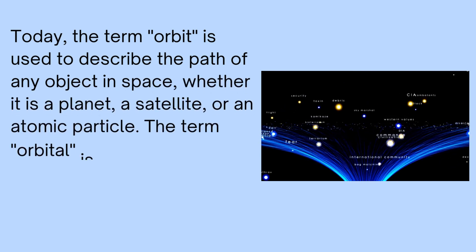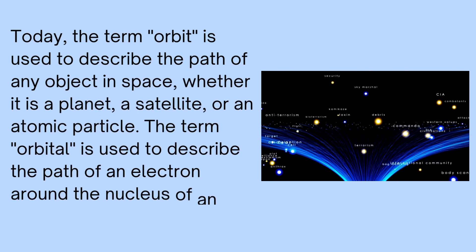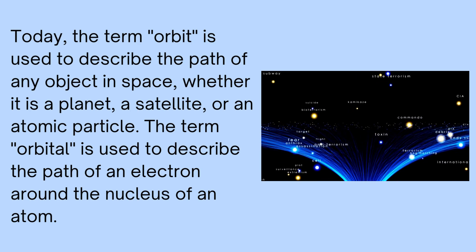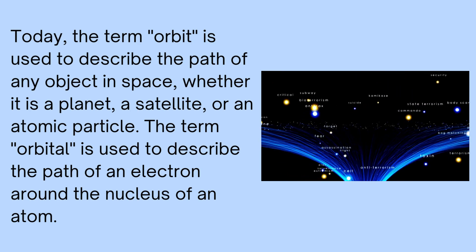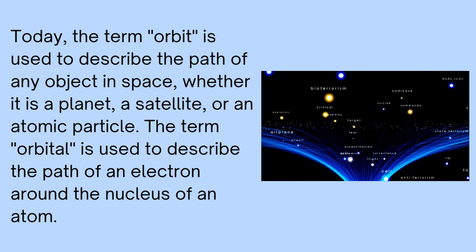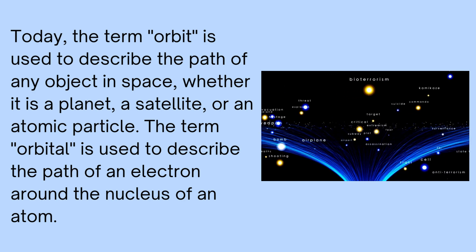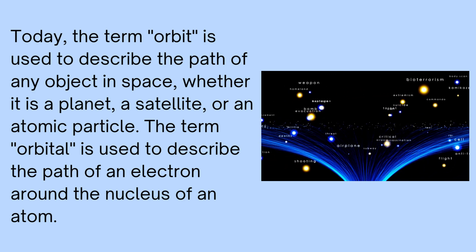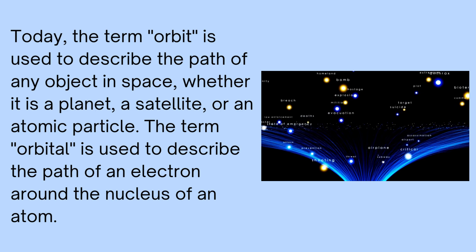Today, the term orbit is used to describe the path of any object in space, whether it is a planet, a satellite, or an atomic particle. The term orbital is used to describe the path of an electron around the nucleus of an atom.